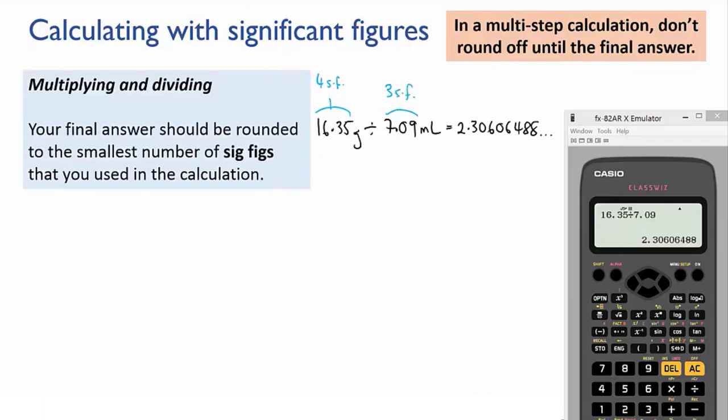The three sig figs is the lower, so that is the number of sig figs that I should express my final answer to. So I round that number to 2.31 grams per mil.